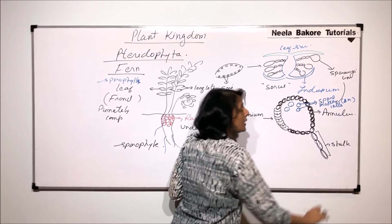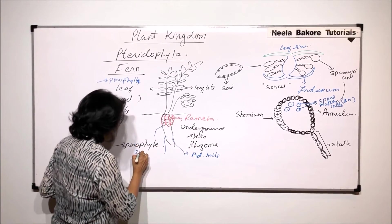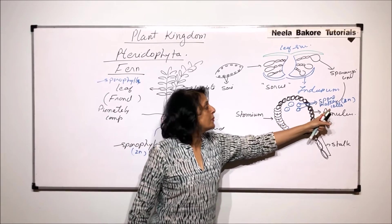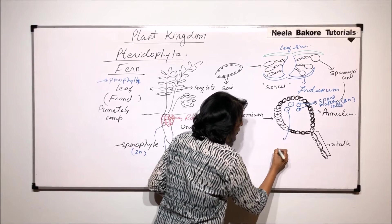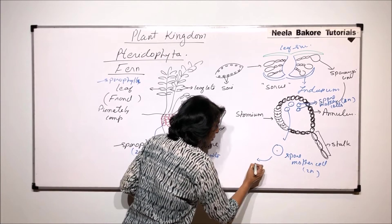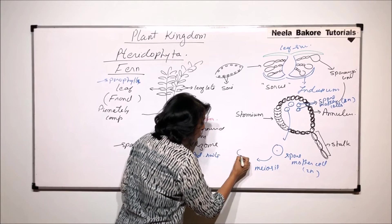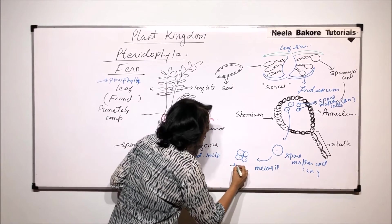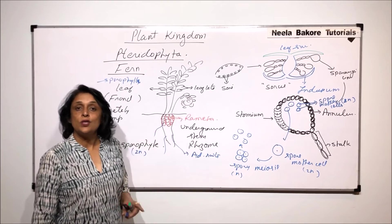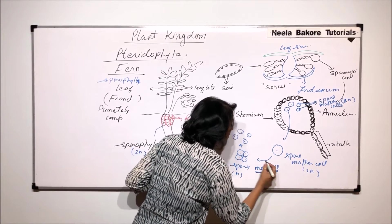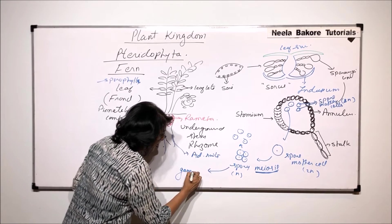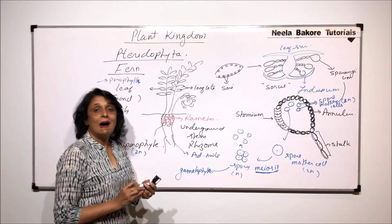Spore mother cells are diploid, meaning the sporophyte is a diploid plant. It produces sporangia during the reproductive season. Inside the sporangium, the diploid spore mother cells undergo meiosis to produce four haploid spores. Initially they may remain attached, but then they separate. The spores, being produced by meiotic division, are haploid, and on germination they give rise to the gametophyte, which is the heart-shaped prothallus.